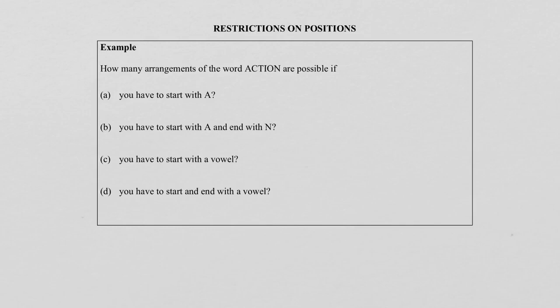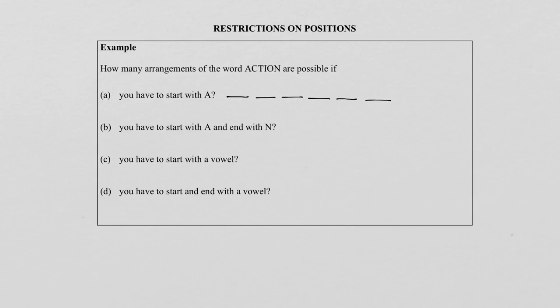Let's now look at the first part. We've got six letters and they're not allowed to repeat. We want to know how many ways we can arrange them if the word will start with an A. You can clearly hear now that they restrict position one. I'm going to draw six lines to represent the six positions of the letters. The letters of the word ACTION can't repeat, and the first position is restricted to the letter A. So the question is, how many ways can we do this position? And it's only one way — there's only one possible letter that we are allowed to use for position one.